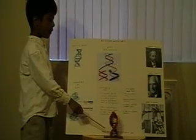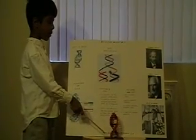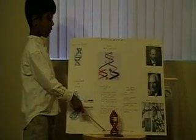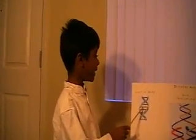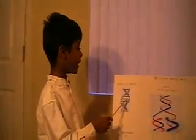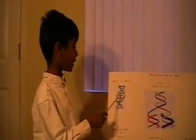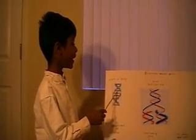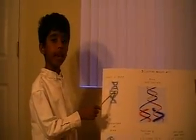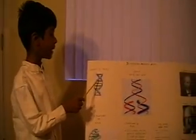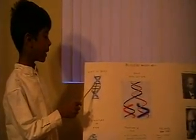This is a model of DNA I made with LEGO for a Science Fair project I have in school. What is DNA? DNA is deoxyribonucleic acid. DNA is the molecule that carries the genetic code that gives all living things their special characteristics.